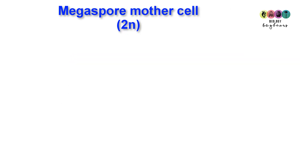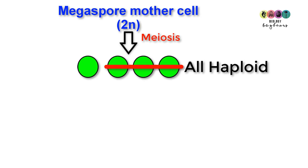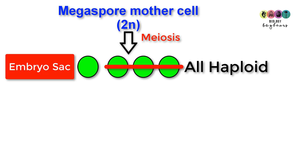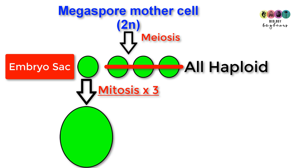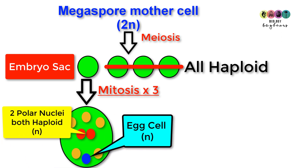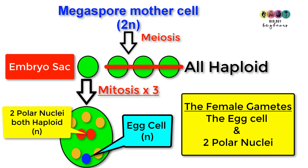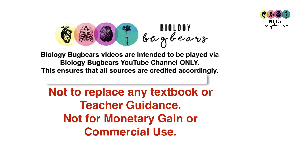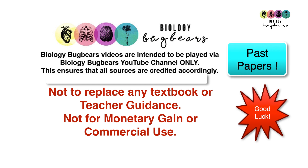Let's go over that one last time. We started off with a megaspore mother cell that was diploid. It underwent meiosis to produce four haploid cells, three of which degenerate or die off, leaving one remaining haploid cell — the embryo sac. Its nucleus undergoes three rounds of mitosis to produce the embryo sac with eight haploid nuclei. Inside that embryo sac will be the egg cell and two polar nuclei; the other five we don't need to concern ourselves with.